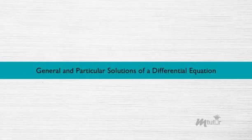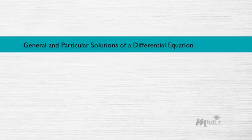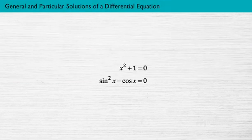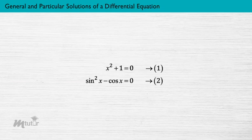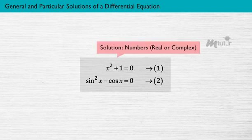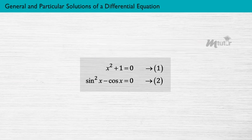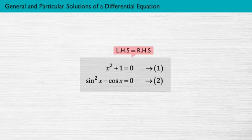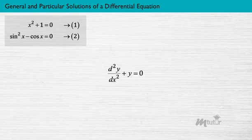General and particular solutions of a differential equation. In our previous classes, we have solved equations of the type displayed on the screen — name them equations 1 and 2. Solutions of equations 1 and 2 are numbers, real or complex, that satisfy the given equation. That is, when the number is substituted for the unknown X, the left-hand side becomes equal to the right-hand side. Now consider the differential equation shown on the screen — name it equation 3.